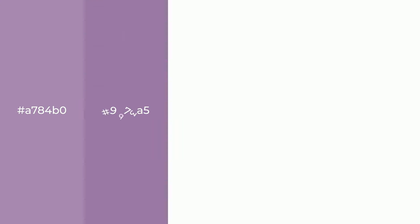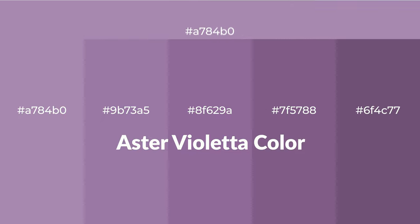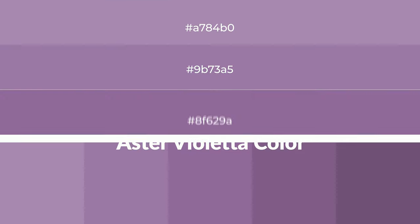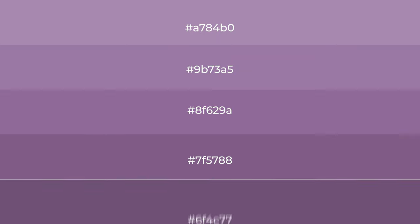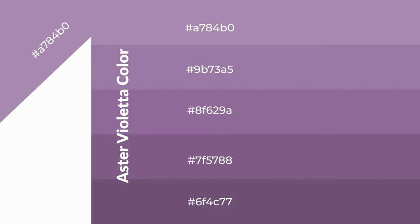Warm shades of Aster Violetta color with violet hue for your next project. To generate tints of a color, we add white to the color — tints create light and exquisite emotions. To generate shades of a color, we add black to the color, and it is used in patterns, 3D effects, and layers. Shades create depth and drama.